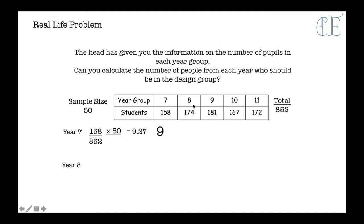In year 8, we have 174 students out of 852 in total. So again on your calculator, 174 divided by 852 and press equals, then press times 50 because that's our sample size, giving us an answer of 10.21 or 10 students.